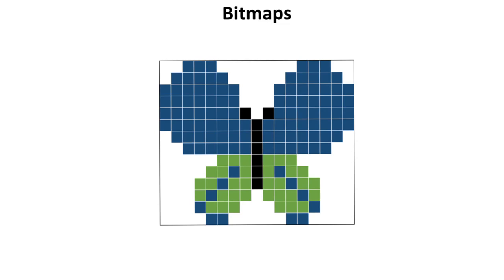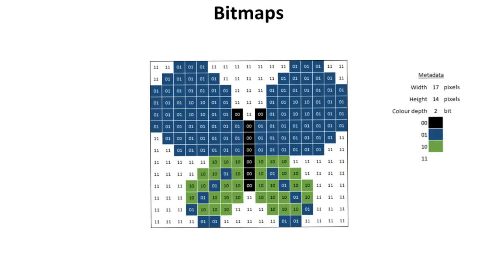Now we've added more colours to the image — we're now using four colours to create this butterfly: black and white from earlier, and also blue and green. It's not sufficient now to have one bit to store the colour depth, because one bit can only hold two values: zero and one. Now we need two bits. With two bits we can store four combinations: zero-zero for black, one-one for white, zero-one for blue, and one-zero for green.